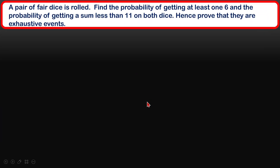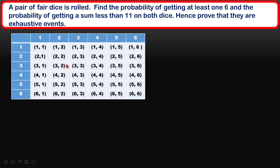Let's look at this example. I have a pair of dice — two dice — and I need to roll them and create the sample space. I'll use a table because it's the easiest way to list the sample space without missing any element. I'll create each outcome and calculate the total number of sample space elements, which is 36.